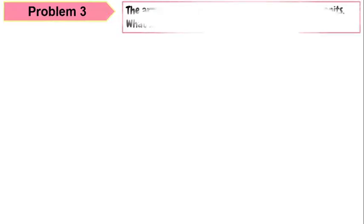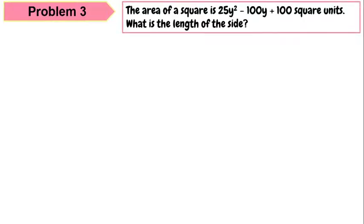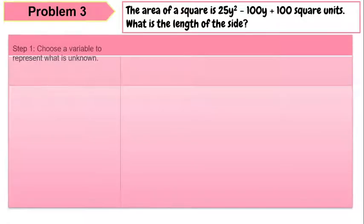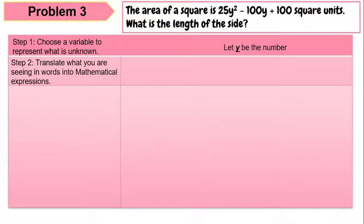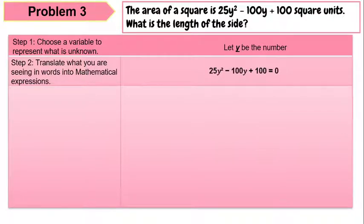Next, problem 3. The area of a square is 25y squared minus 100y plus 100 square units. What is the length of the side? Choose a variable to represent what is unknown — we're going to find the length of the side, so let y be the number. Translating into a mathematical expression: 25y squared minus 100y plus 100 equals 0.